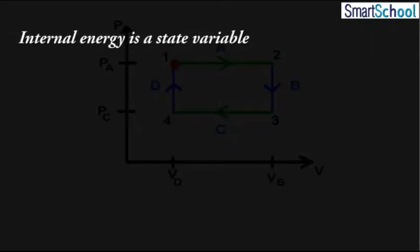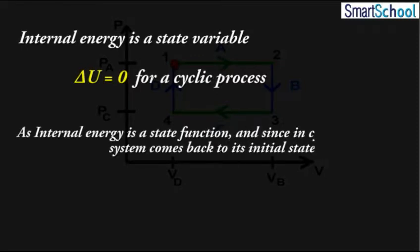Since internal energy is a state variable, delta U equals to 0 for a cyclic process. As internal energy is a state function and since in cyclic process the system comes back to its initial state.